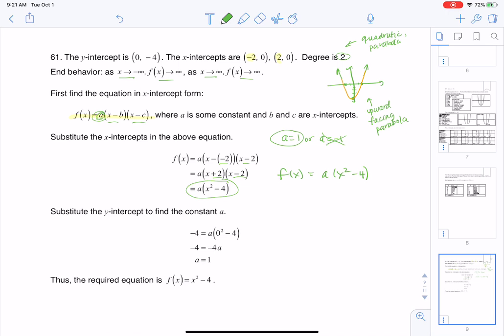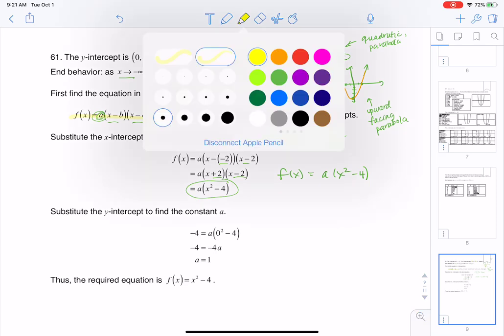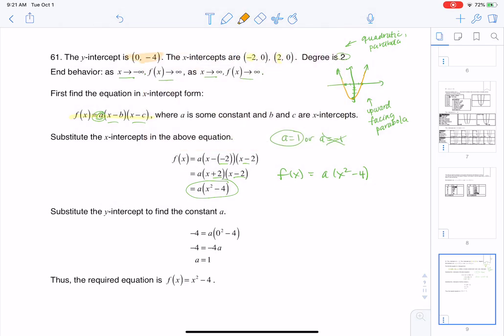But another way to do it, and I think probably a better way to do it, just to practice future problems like this, is it told you the y-intercept was 0, negative 4. So what I can do is I can plug in 0 for x, and I can plug in negative 4 for y, and that'll allow me to solve for A. So you see me doing that over here. And as I solve for A, sure enough, A is 1. So then my function just simplifies to x squared minus 4.